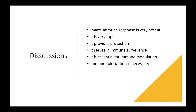Now let's discuss what we have learned so far. From this video we have understood that the innate immune response is very potent and essential for our immune system. It is very rapid and mainly involved in the protection of our body. The innate immune response also serves for immune surveillance to recognize any pathogen or infection occurring inside our body. It is essential for immune modulation and immune toleration — for example, immune toleration during pregnancy is very essential. If immune toleration against paternal antigen doesn't occur, it can lead to complications in pregnancy.